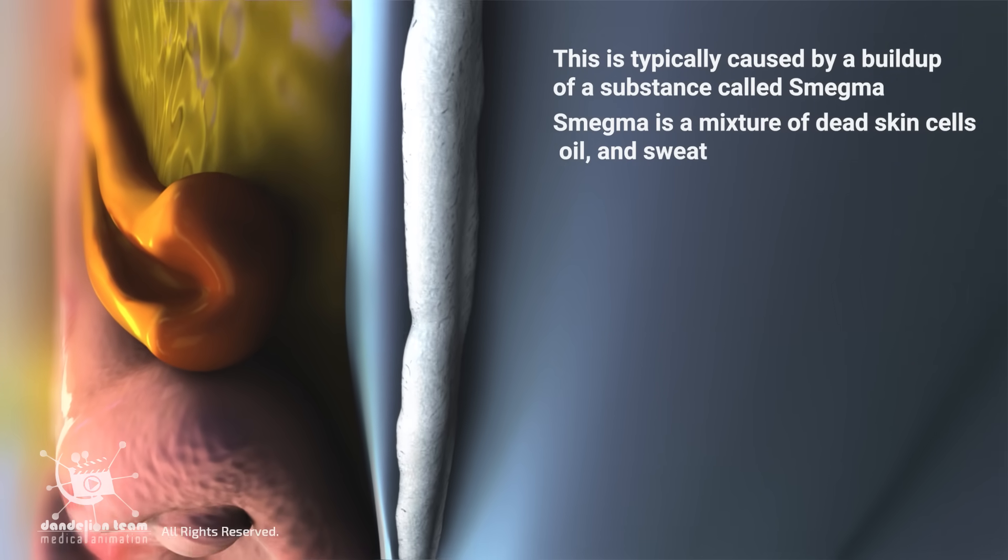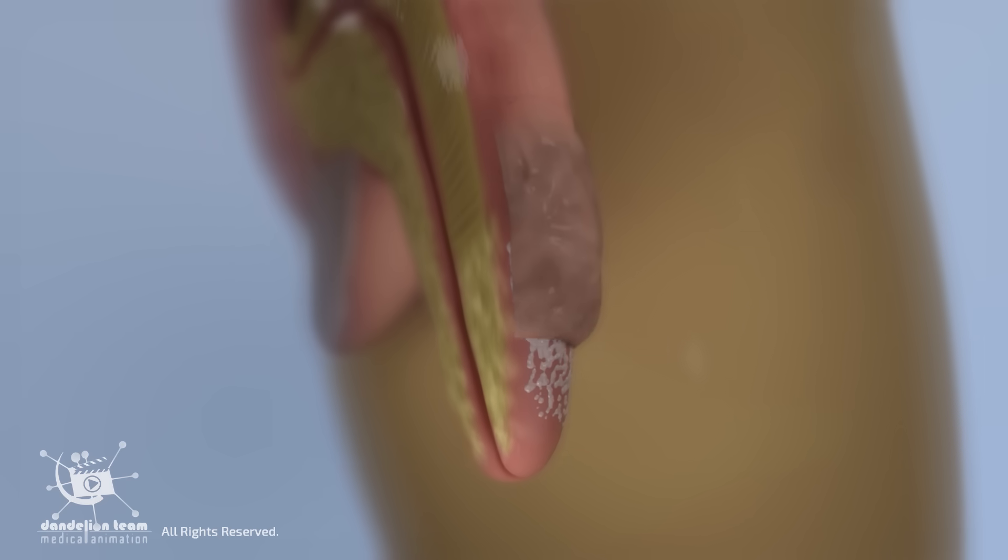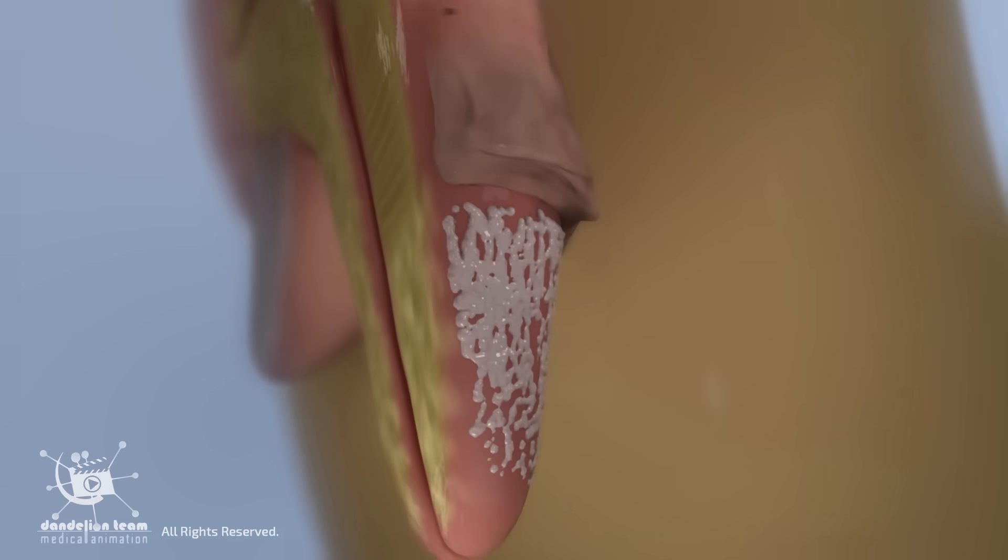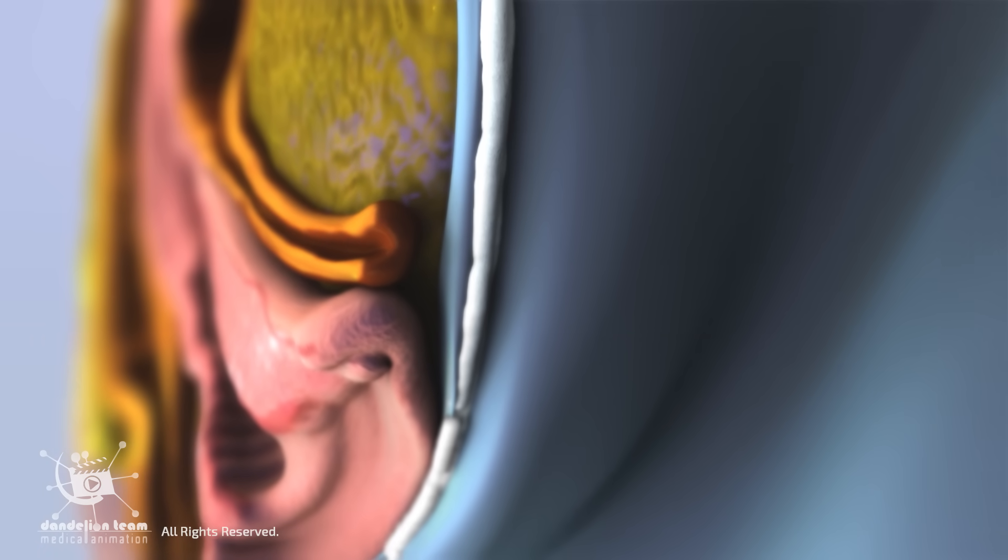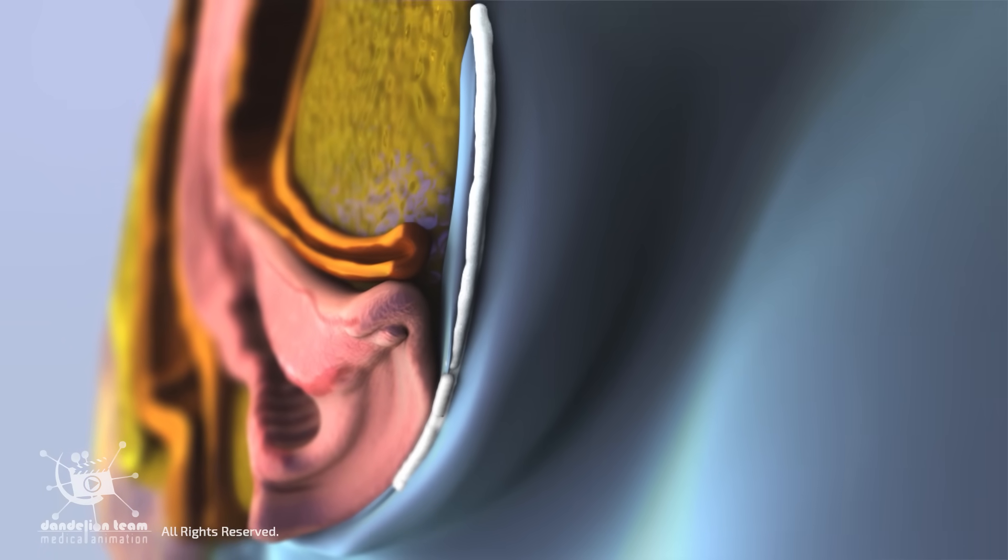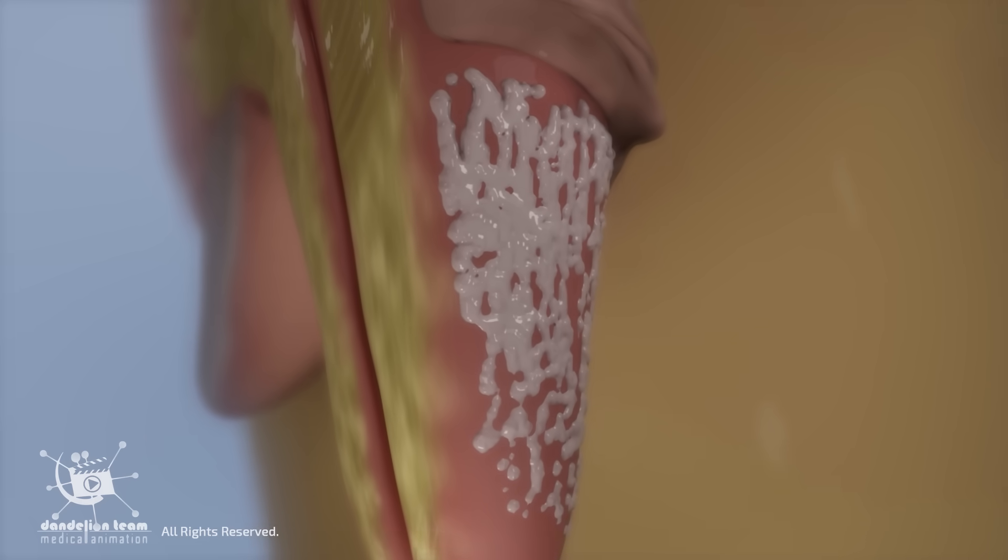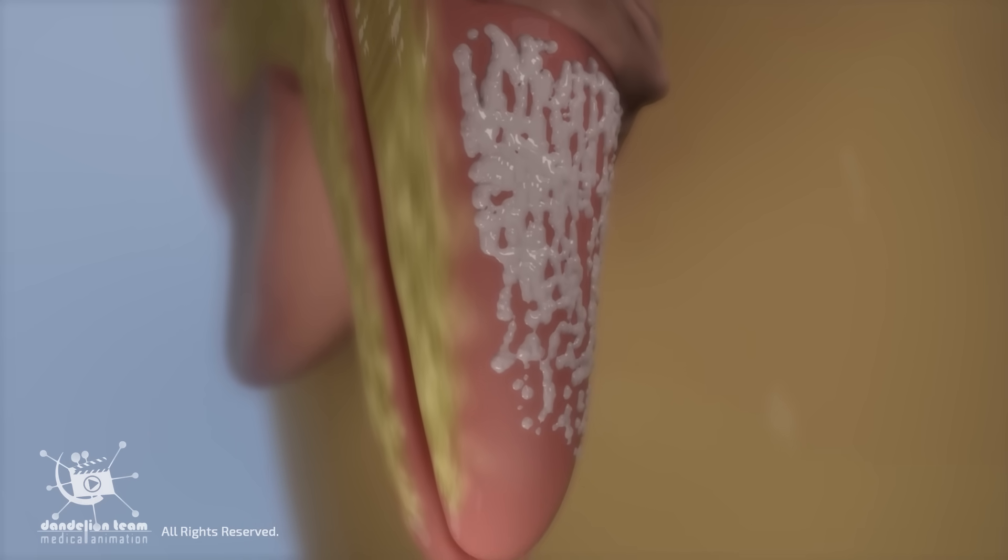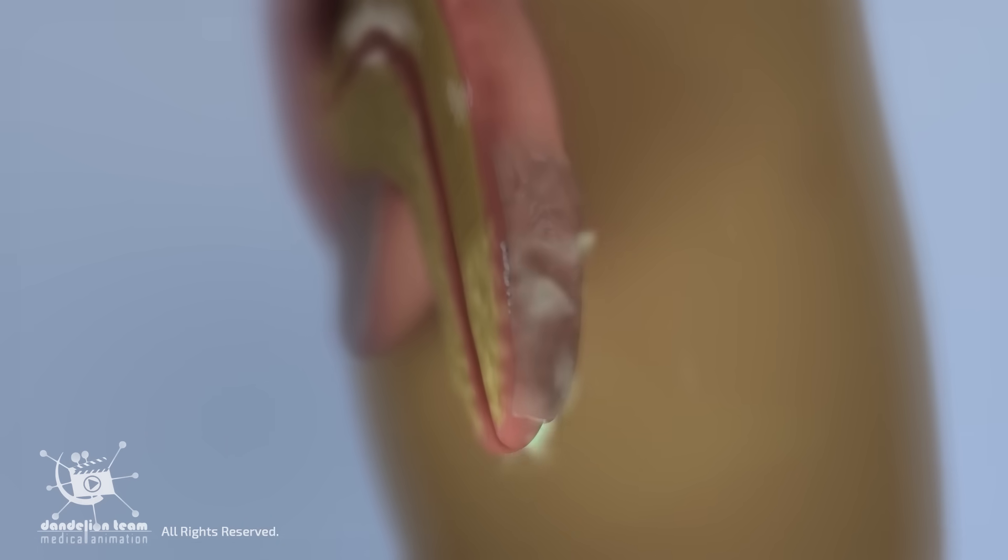Smegma can accumulate under the foreskin in uncircumcised males or in the folds of the labia in females. It usually isn't a health problem, but bacteria can grow in it, causing it to smell bad.